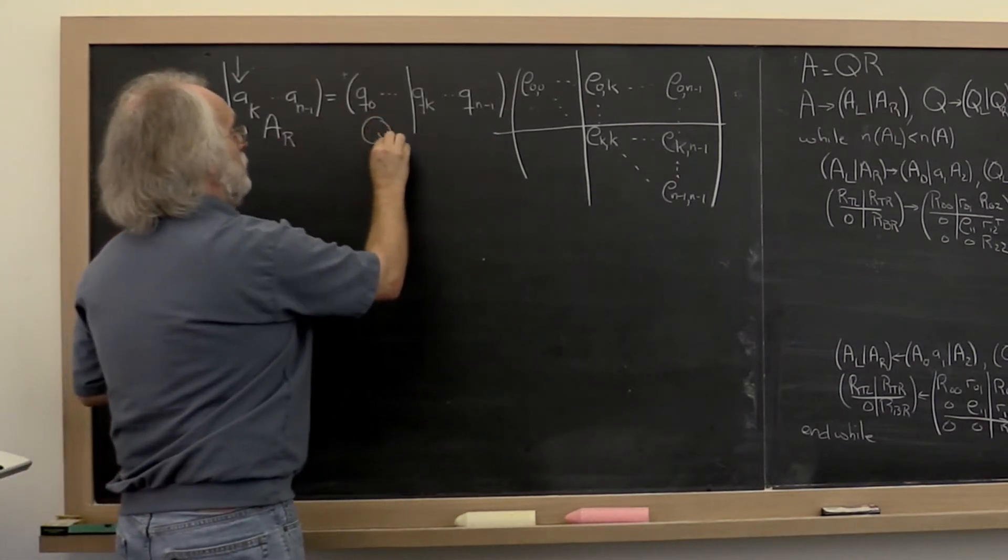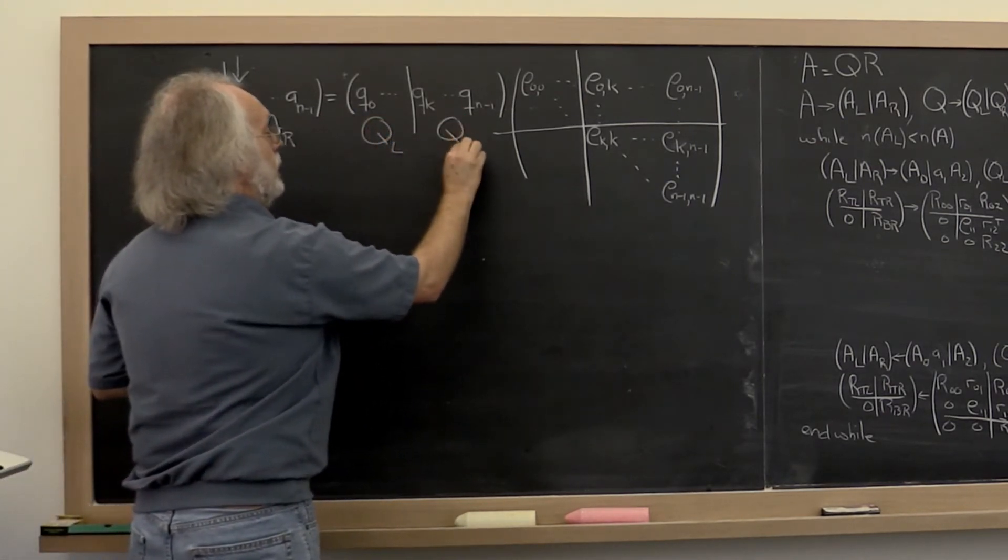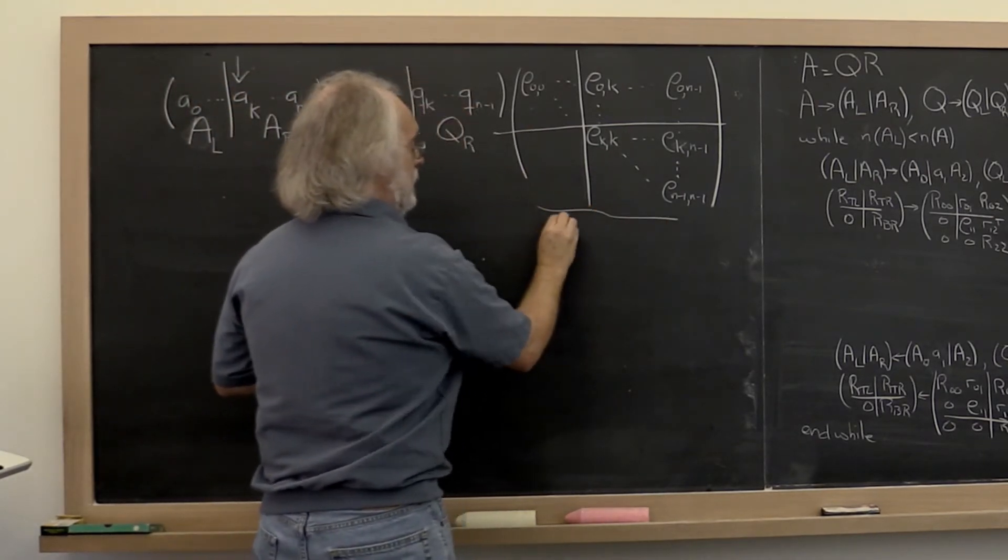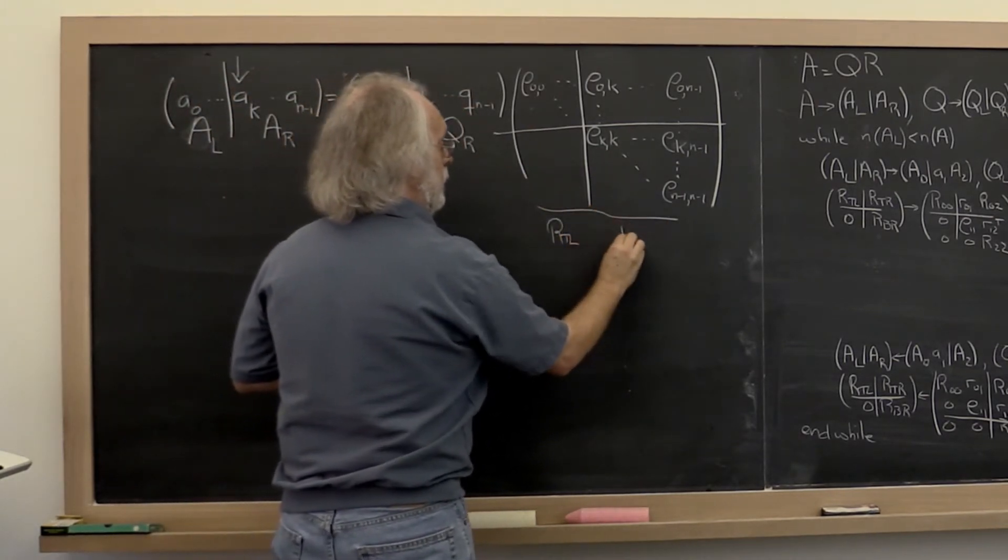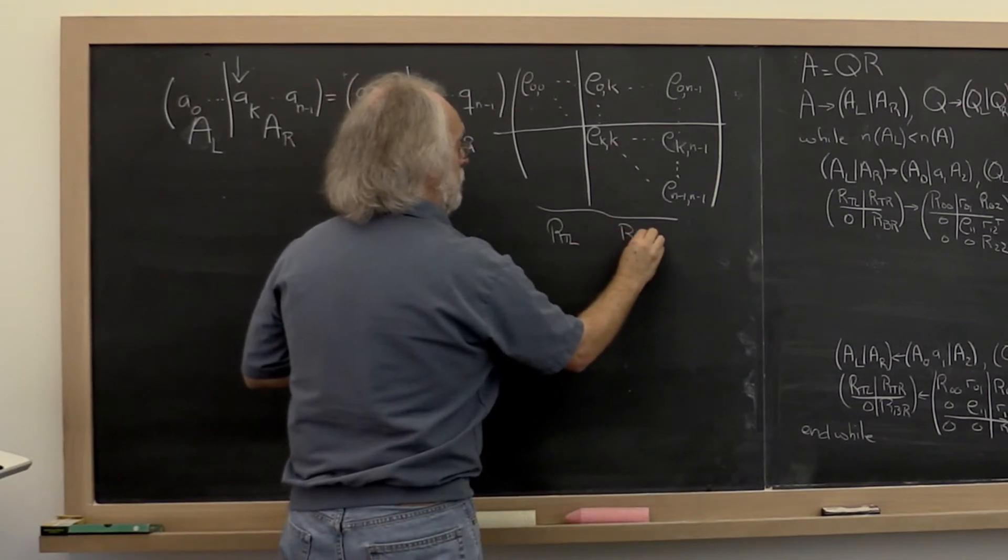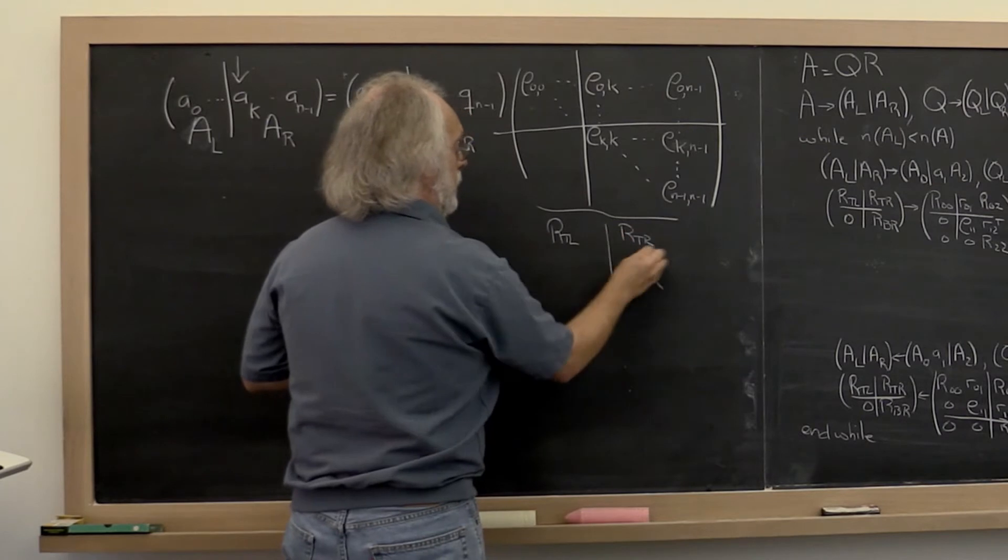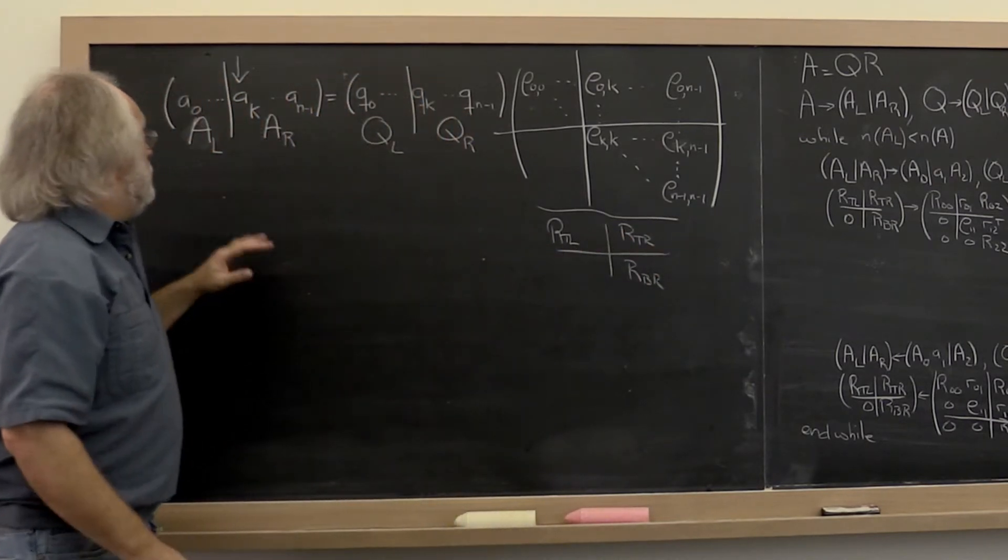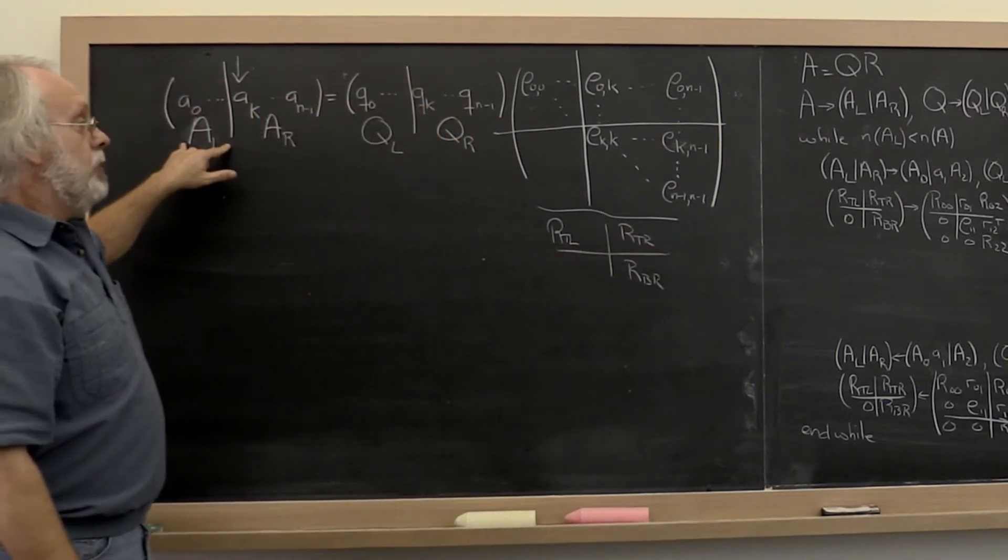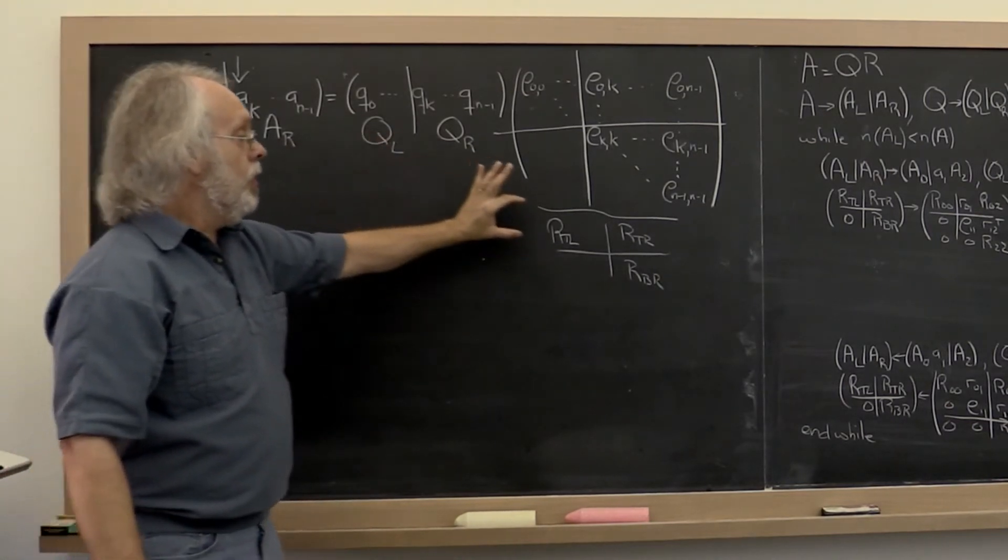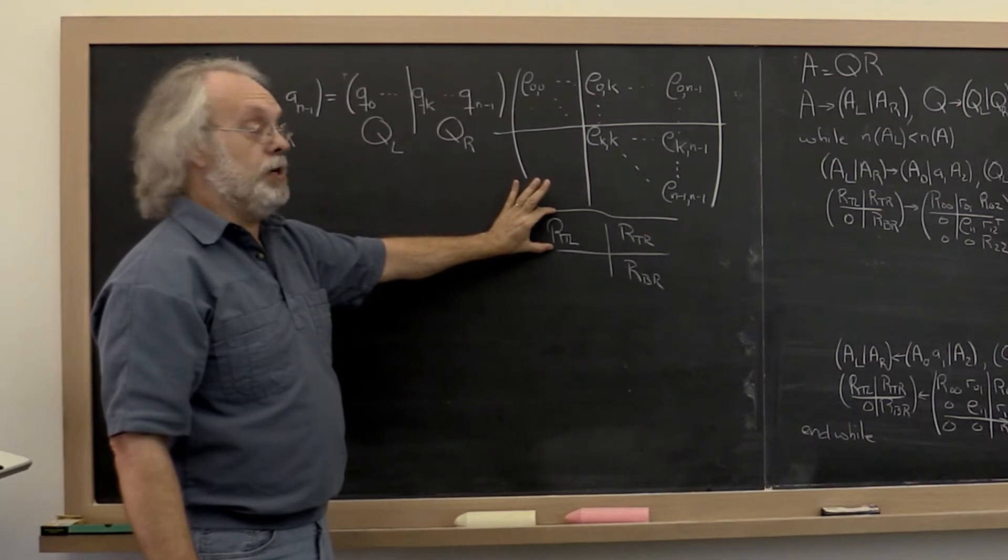And similarly we can call this Q left, Q right. And then we can summarize this as R top left, R top right, R bottom right. And now what we can say is A left has already been processed, Q left has already been computed, R top left has already been computed.